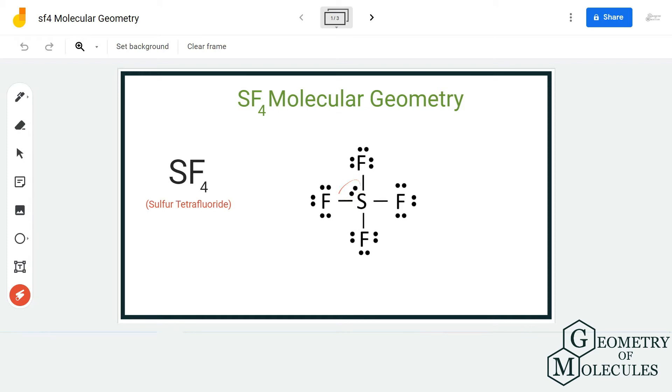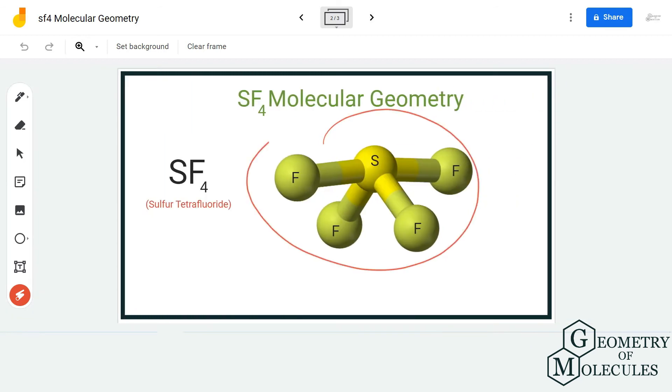This might seem like a tetrahedral structure, but if you look at the 3D structure, it is somewhat different. Due to the lone pair present on the sulfur atom, two fluorine atoms are pushed apart from each other.